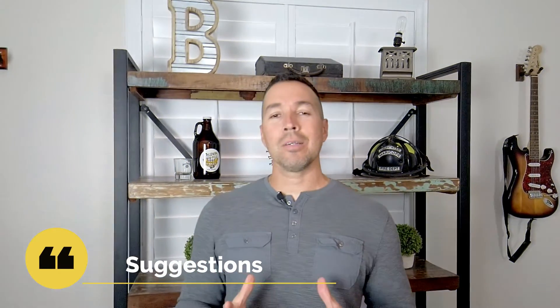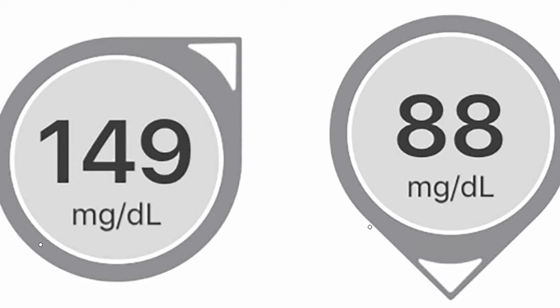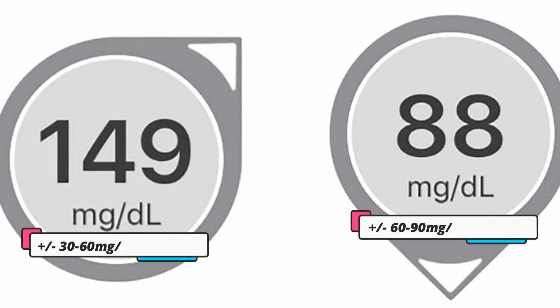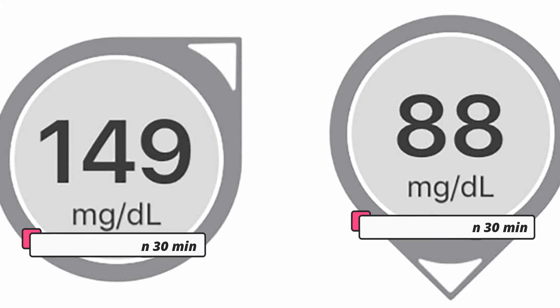Suggestion: when using the Dexcom G6 app, it would be amazing if just below the trending arrow there was a small reminder that helped forgetful people like me to know what that arrow is really supposed to mean.